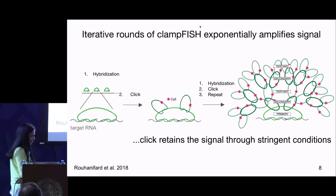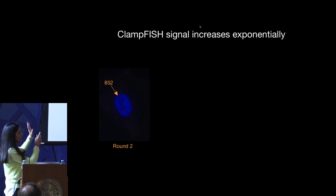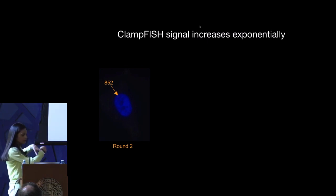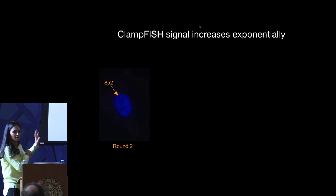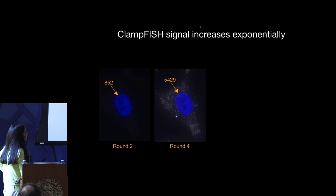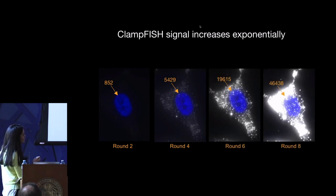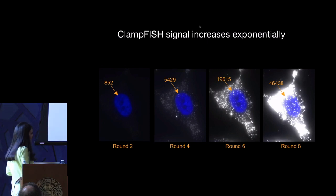So what does that look like on cells? At round two, this is roughly the equivalent of what a single molecule FISH image would look like — you can see spots. At round four, round six, and round eight on the same cell, we can see the signal is growing, which is exactly what we wanted to see.